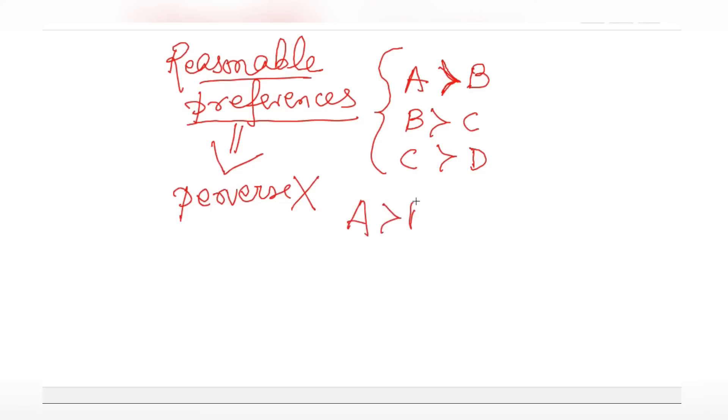What about I change this D to something else? Let's say in place of D I put A here. C is preferred to A. What does this mean? This means that utility of A is greater than utility of B is greater than utility of C is again greater than utility of A.